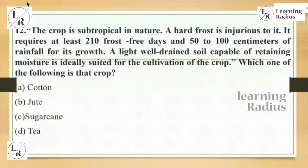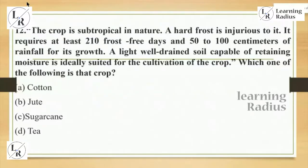Question 12 is a direct physical geography question — they gave conditions for the growth of cotton: hard frost is injurious, 210 frost-free days are required, 50 to 100 centimeters of rainfall is required, and well-drained soil is needed. Just by reading the conditions themselves you can understand this is cotton.